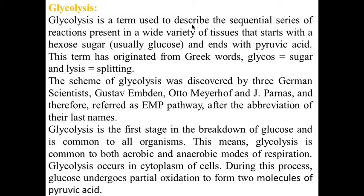Glycolysis is a term used to describe the sequential series of reactions present in a wide variety of tissues that starts with hexose sugar and ends with pyruvic acid. This term originated from Greek words: 'glycos' means sugar and 'lysis' means splitting. The scheme of glycolysis was discovered by three German scientists in 1930 — Gustav Embden, Otto Meyerhof, and J. Parnas — and is therefore referred to as the EMP pathway, after the abbreviation of their last names.